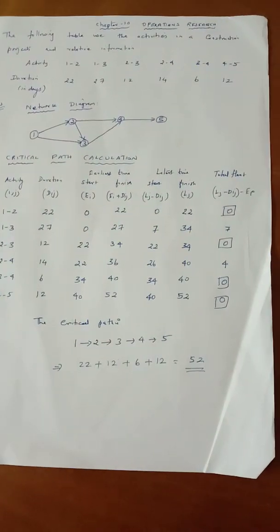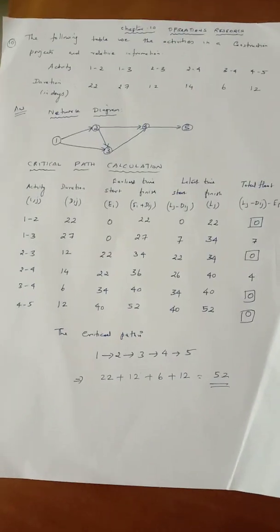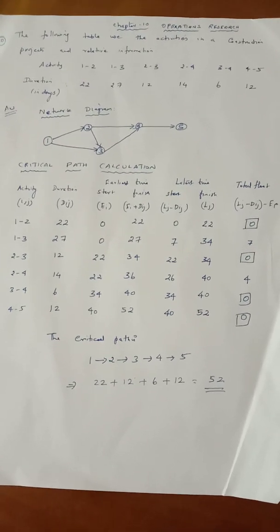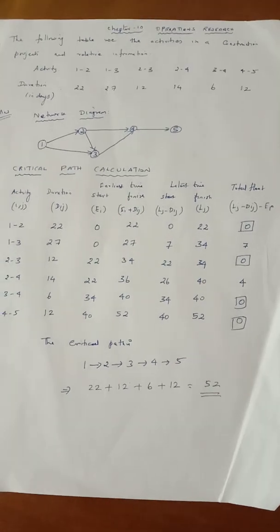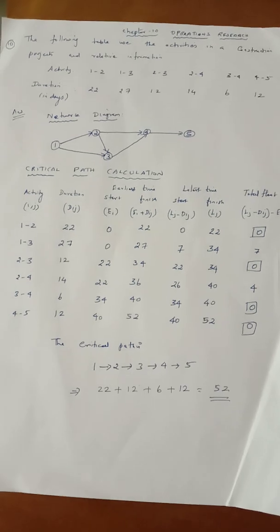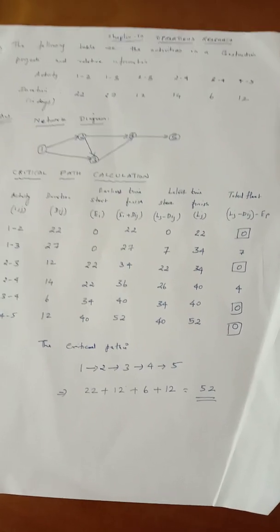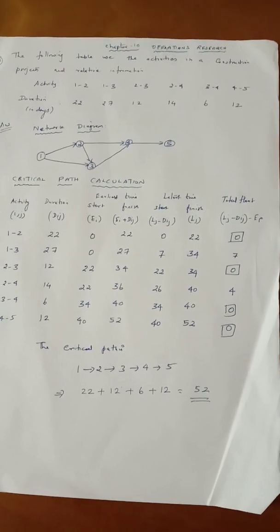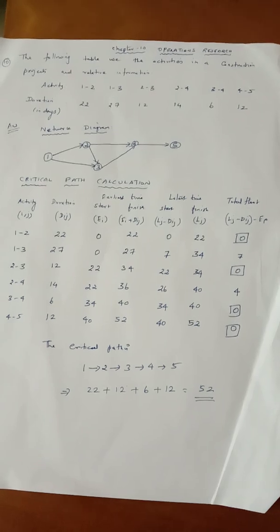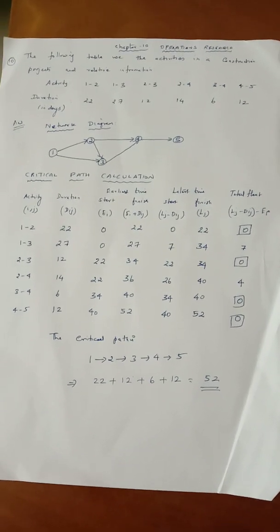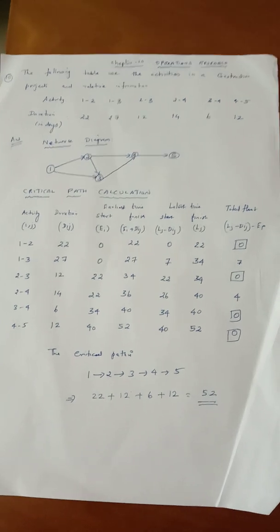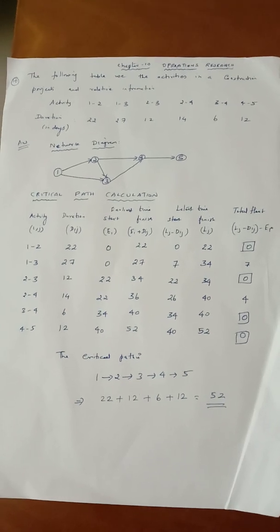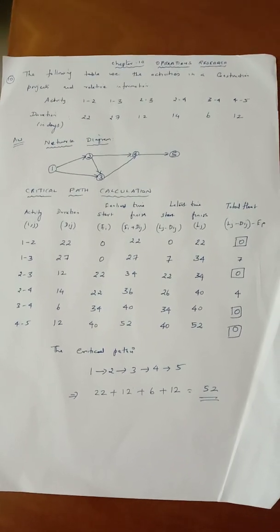Chapter 10, Operations Research, Sum number 10. The following table gives the activities in a construction project and relative information. Activities are: 1→2, 1→3, 2→3, 2→4, 3→4, and 4→5. The durations in days are 22, 27, 12, 14, 6, and 12 respectively.